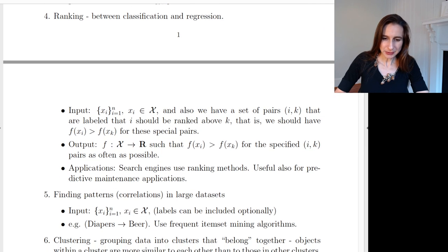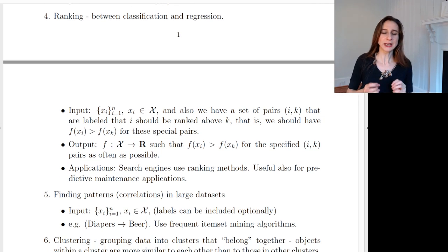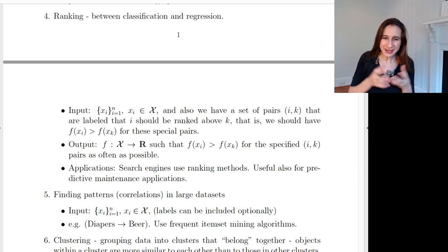The problem of supervised ranking is kind of right in between classification and regression. For supervised ranking, the labels actually involve pairs of observations. You have your input data, let's say that they're movies, and then your labels are whether one movie should be ranked above another movie. You don't actually get a full rating for each movie. You just know that the person went to see two movies and they liked this one better than that one.